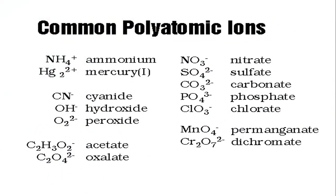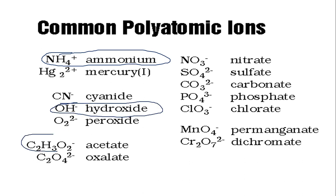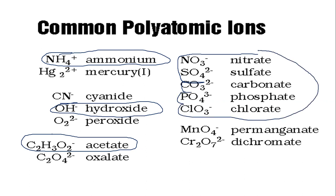You can look at some common polyatomic ions — I would pause this and write these down. The major ones we use in my physical science class are ammonium, hydroxide, acetate, nitrate, sulfate, carbonate, phosphate, and chlorate. Sometimes I bring in permanganate, sometimes not. Those are the commonly used ones in my class, but there are many other polyatomic ions out there.